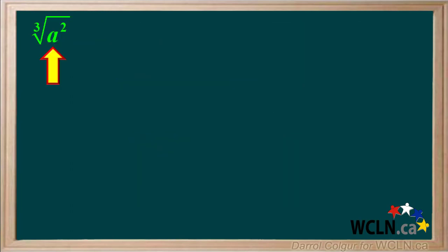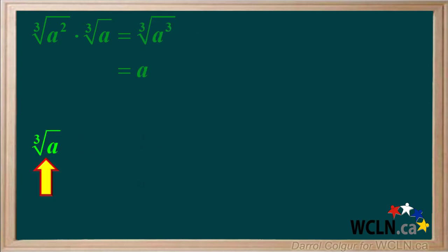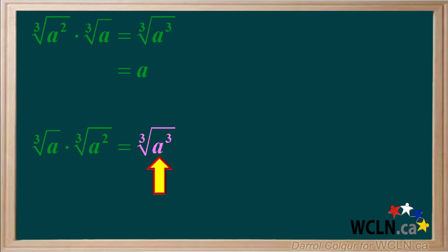For example, if we have the cube root of a squared, we multiply it by the cube root of a, or a to the first. This gives us the cube root of a cubed, which is equal to a, so we remove the radical. If we start with the cube root of a, we need to multiply it by the cube root of a squared to obtain the cube root of a cubed, which again is equal to a.